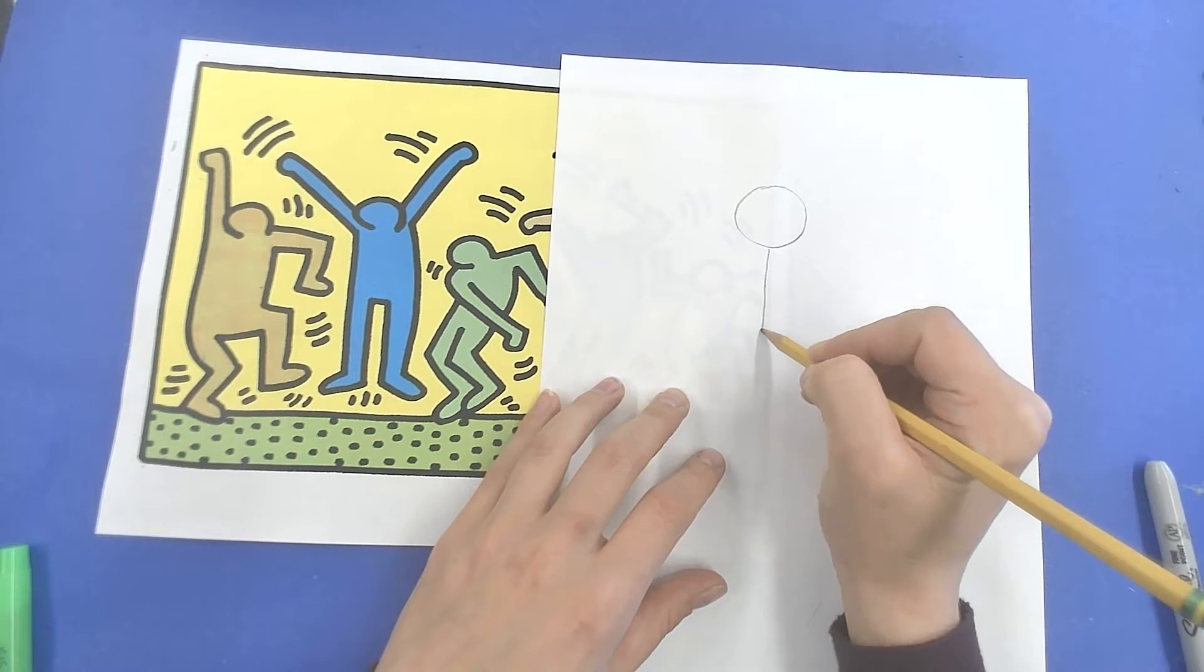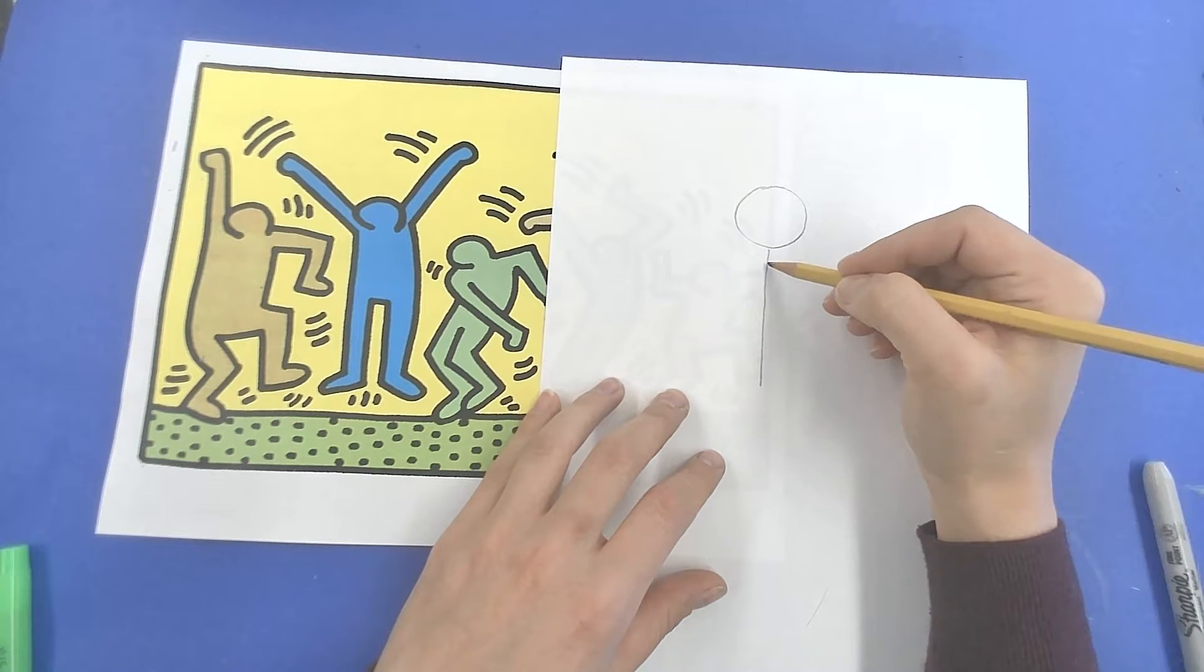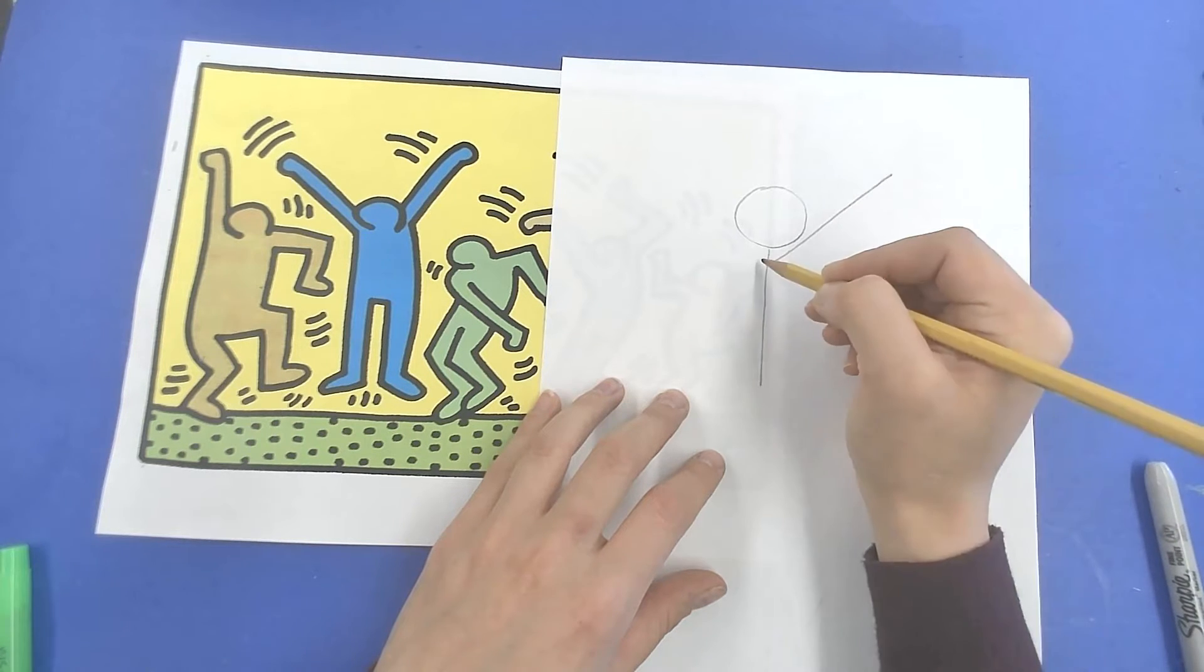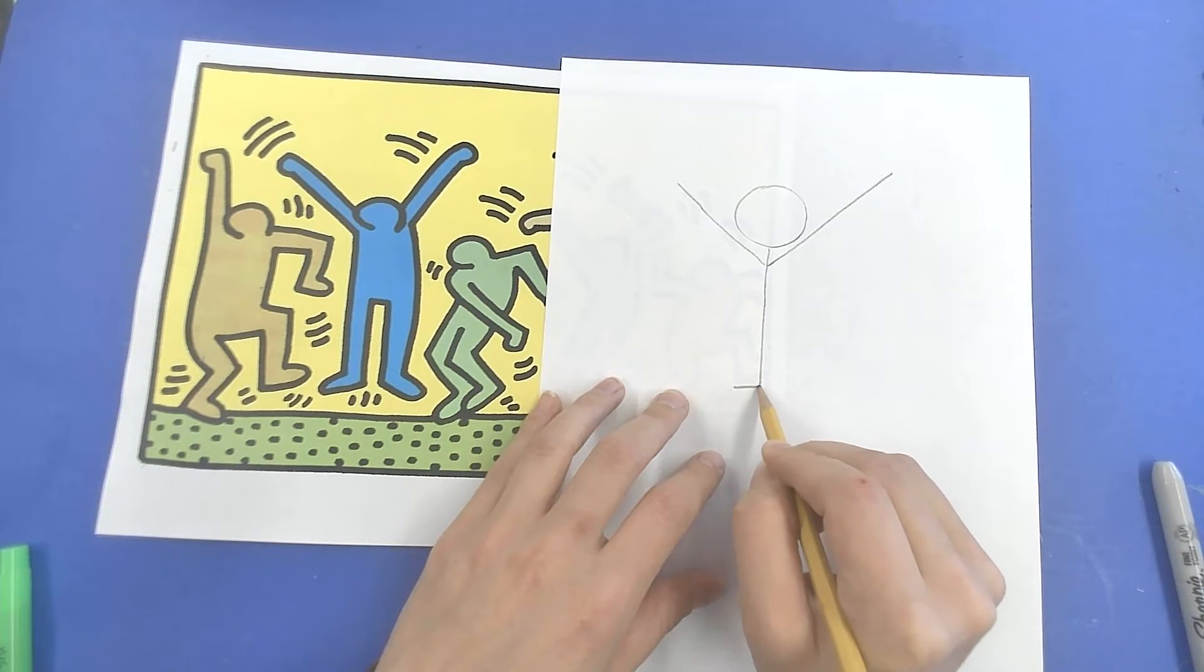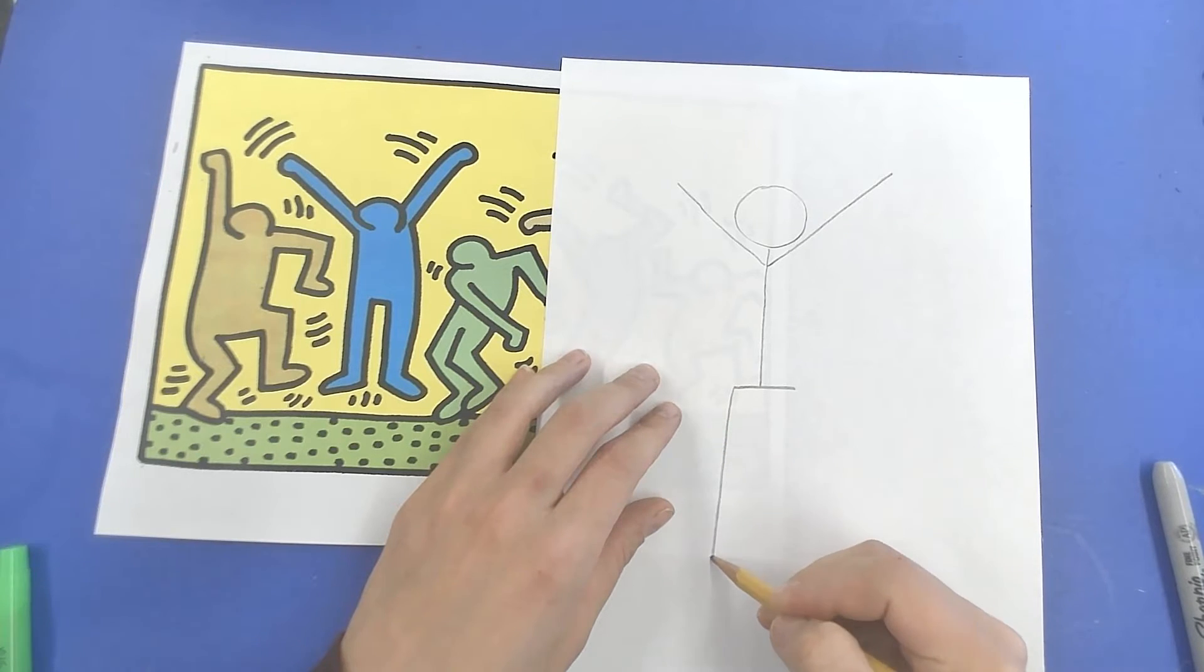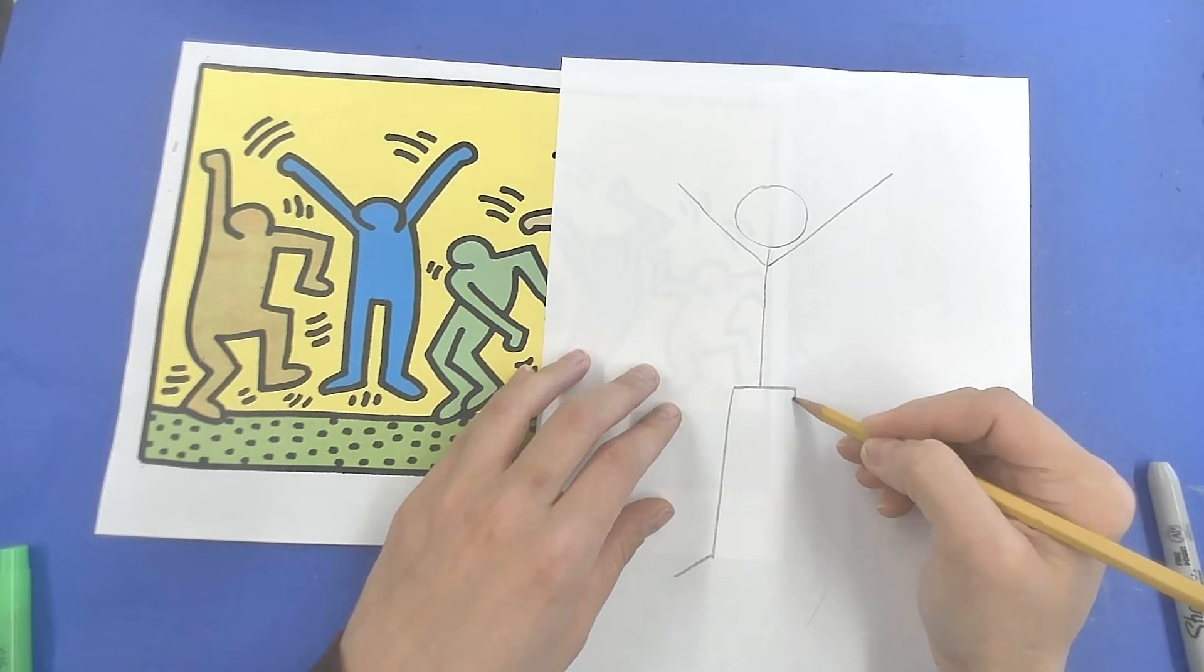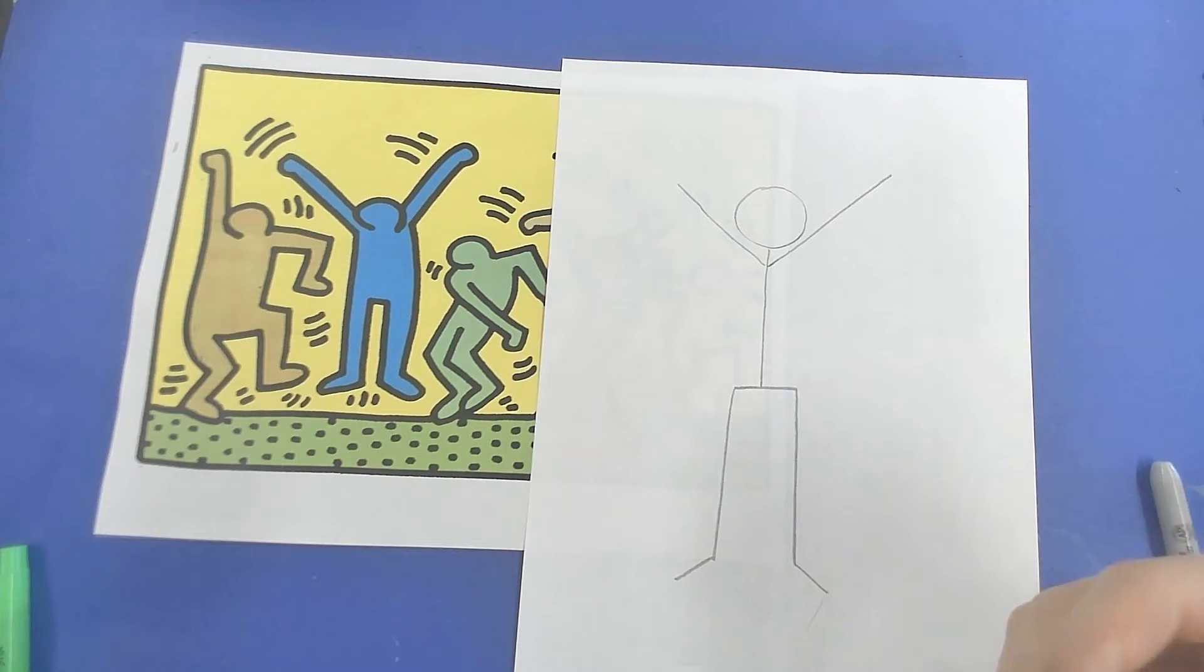Then we're going to draw a line for his spine and then two arms coming up. And then down here, I'm going to draw a line going across for the hips and then one leg and another. So this is kind of like those wire people that we made. Think of this like a skeleton.